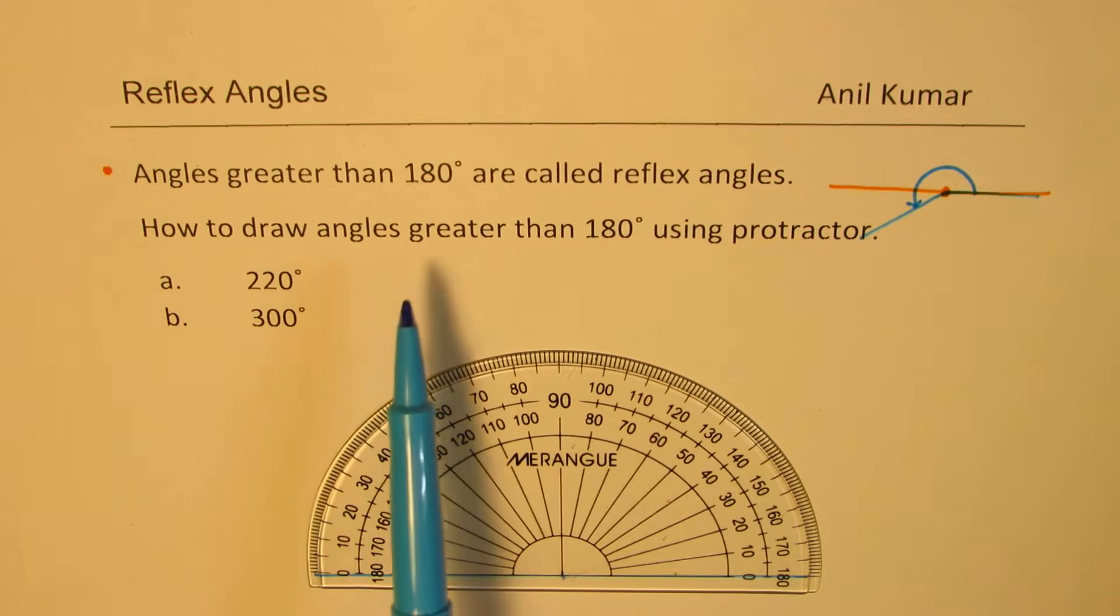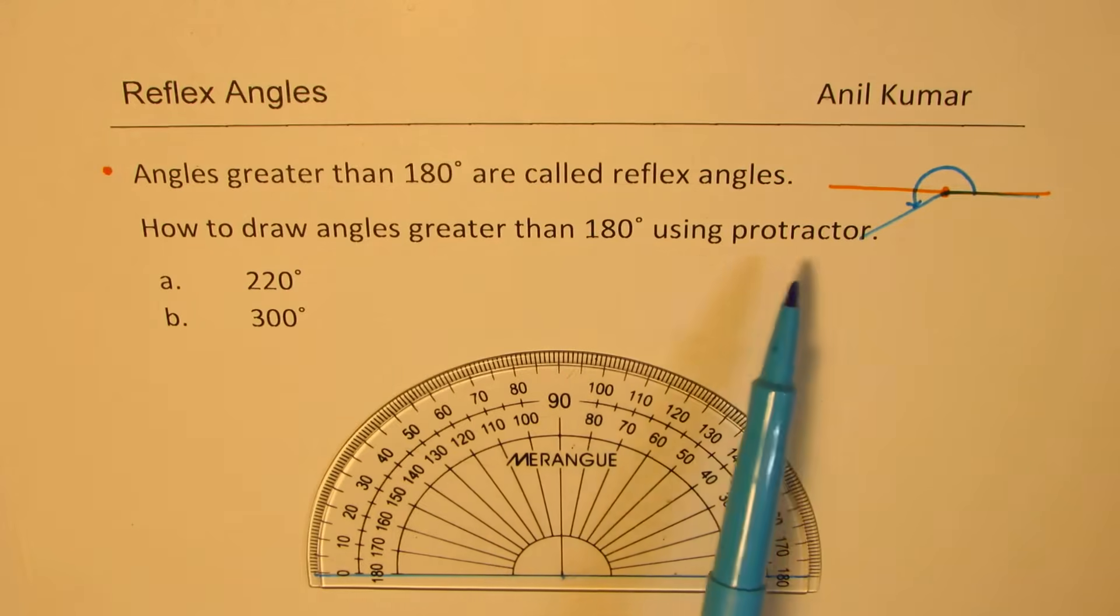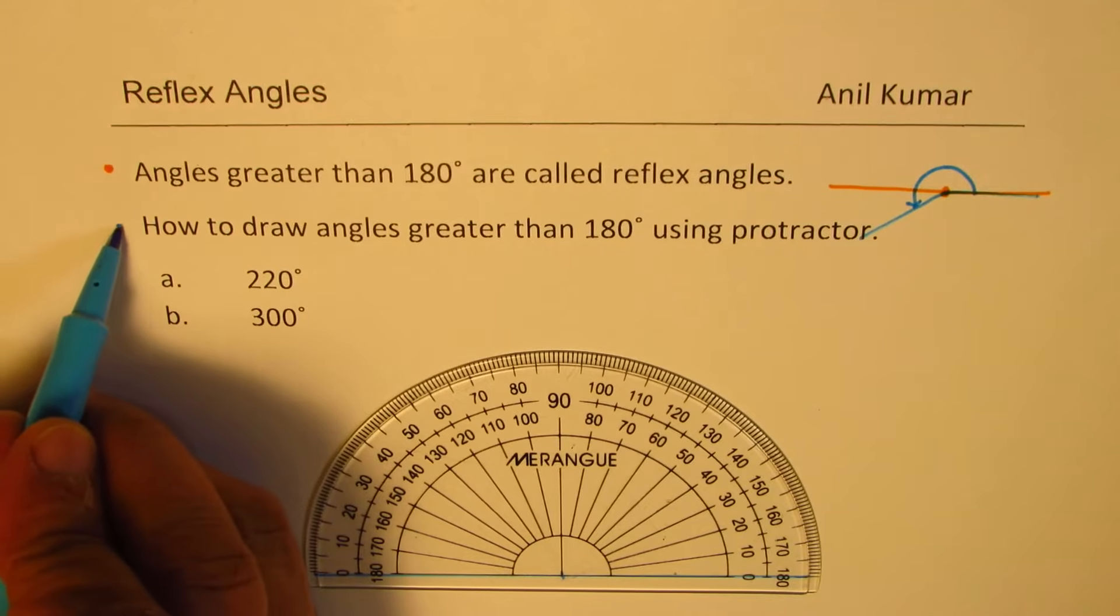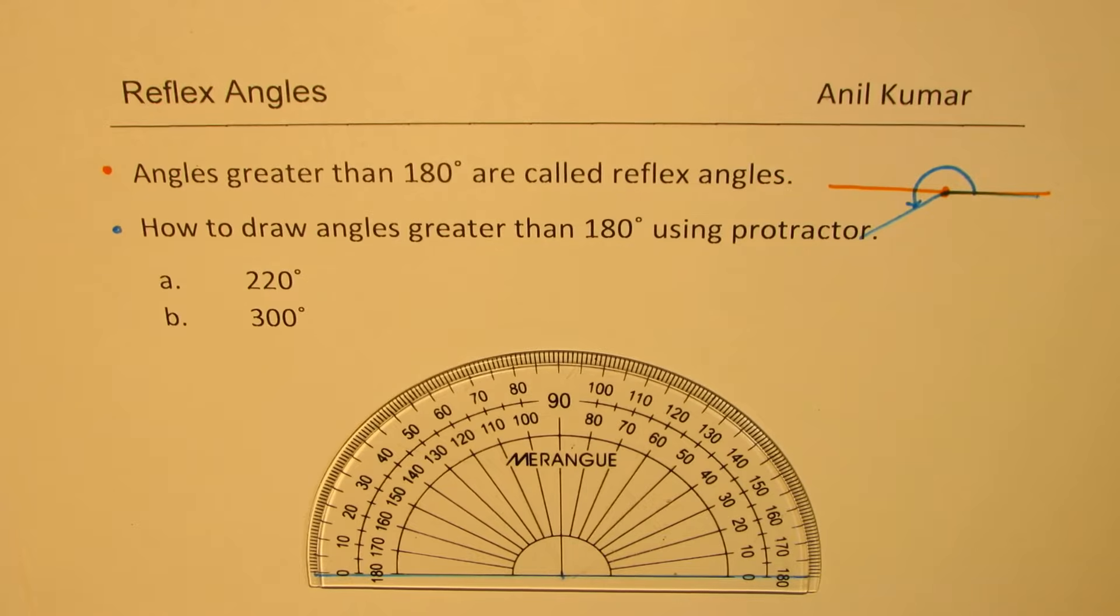Now the question is, how to draw angles greater than 180 degrees using a protractor? The idea is it is from 0 to 180 degrees. So we do not have a circular protractor with us and we need to draw 180 degrees with this D. Here are two examples for you. We'll show you how to draw 220 degrees and also 300 degrees using this protractor.